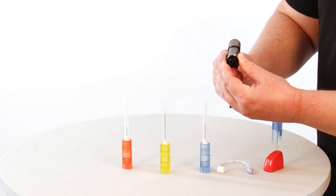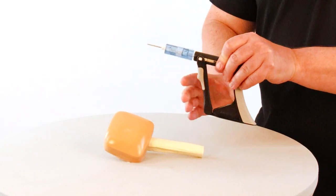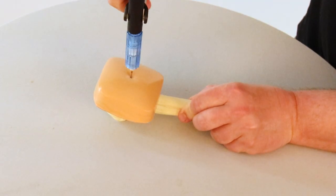Catheter placement is achieved by repeated trigger actuation that creates a rotational spin. Continual actuation combined with gentle downward pressure results in simple I.O. placement.